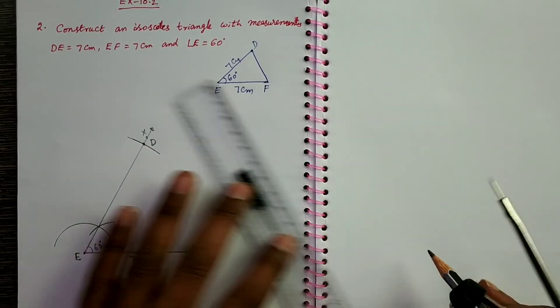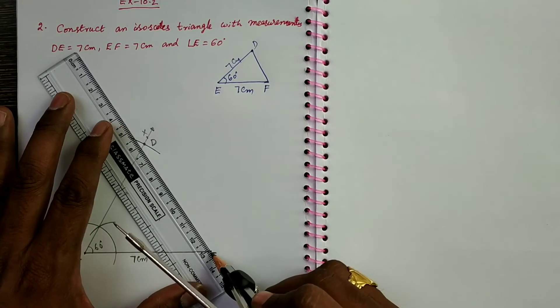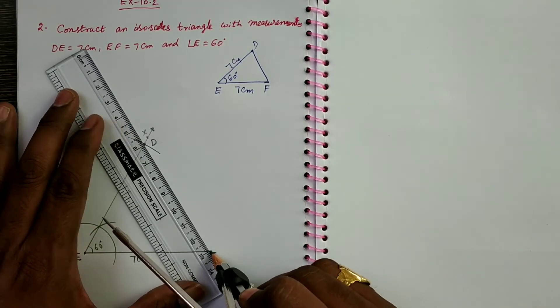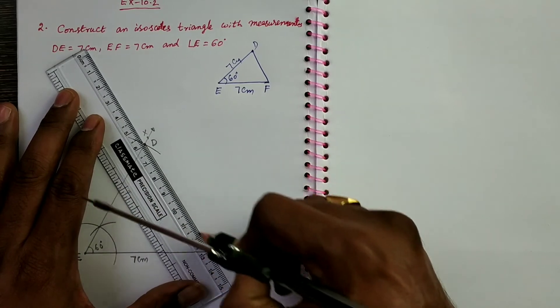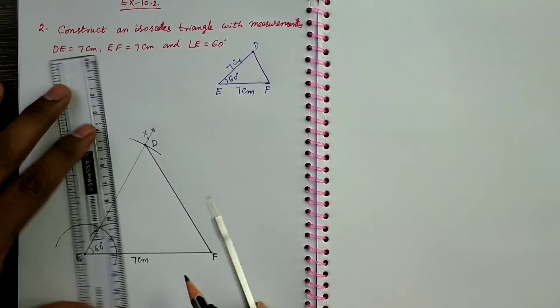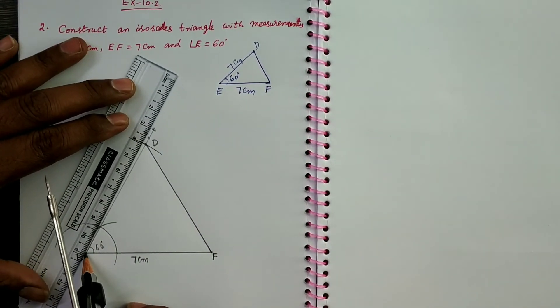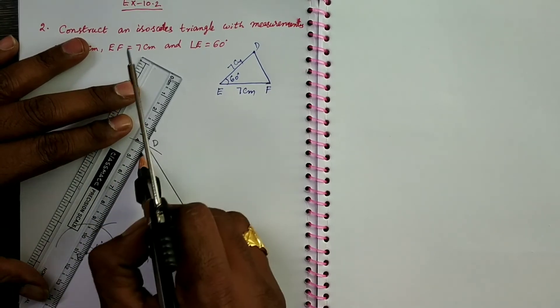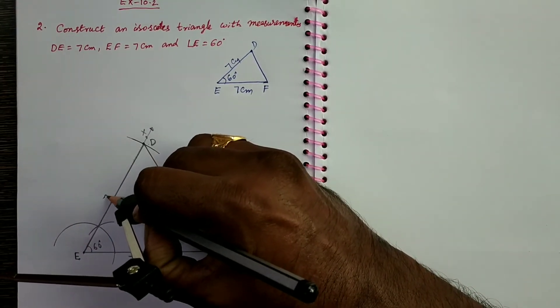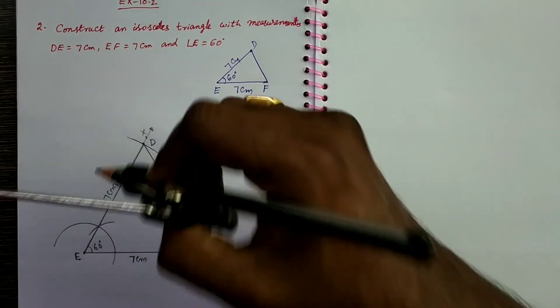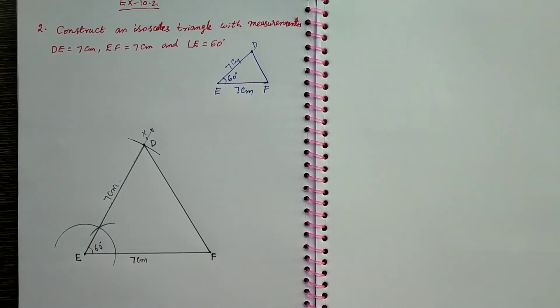So this point represents D. Now you join D to F. So this is the required triangle DEF. This is 7 centimeters. So the construction is over.